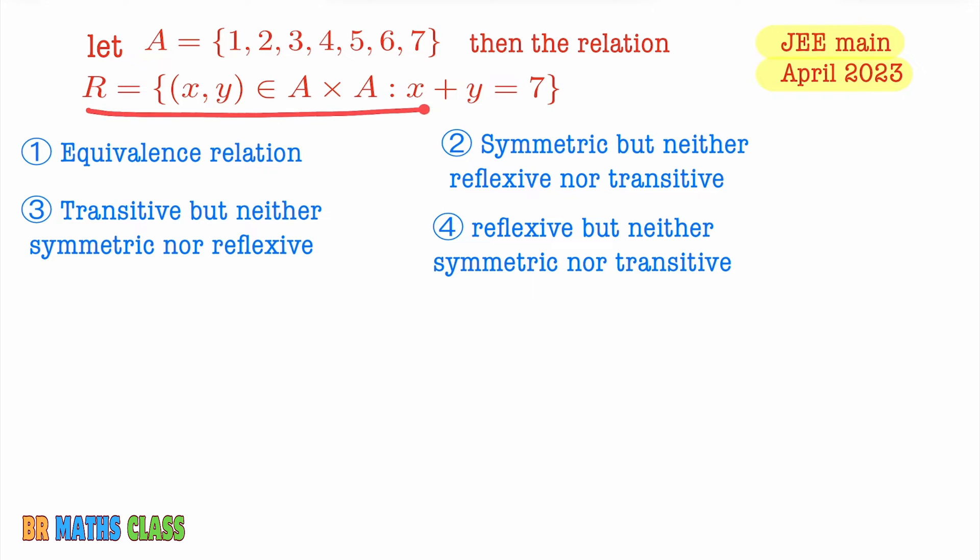Here best method is you write this relation into roster method. Here two things you need to observe: X is an element from set A, Y is also an element from set A. You observe here as they are given x + y = 7. From this I can write y = 7 - x.